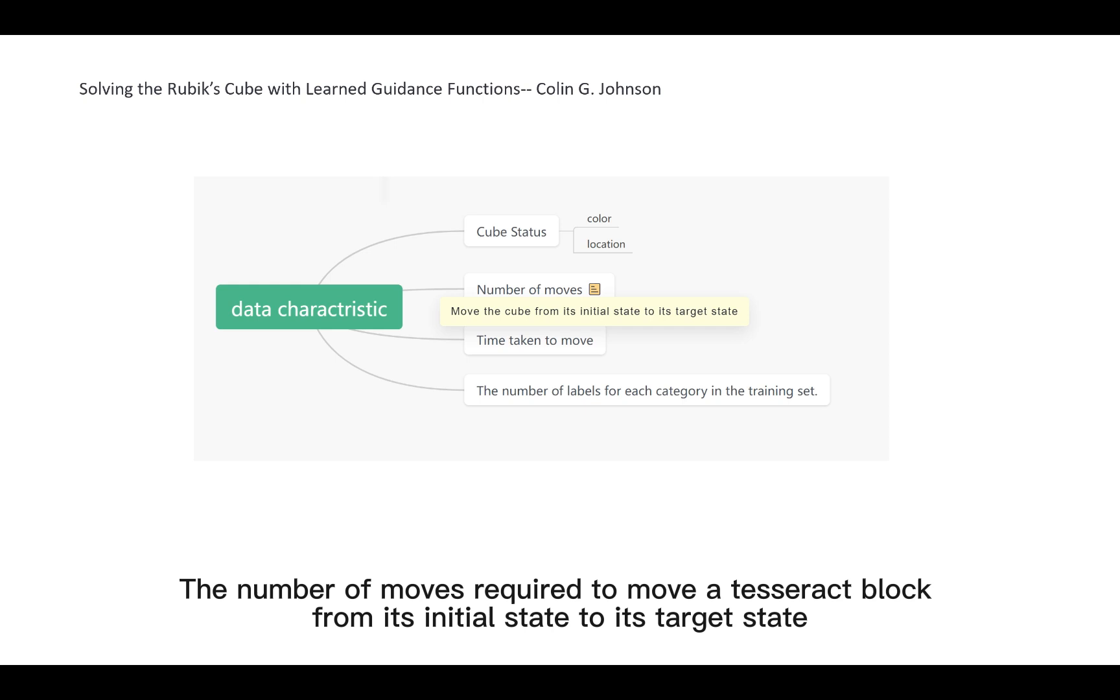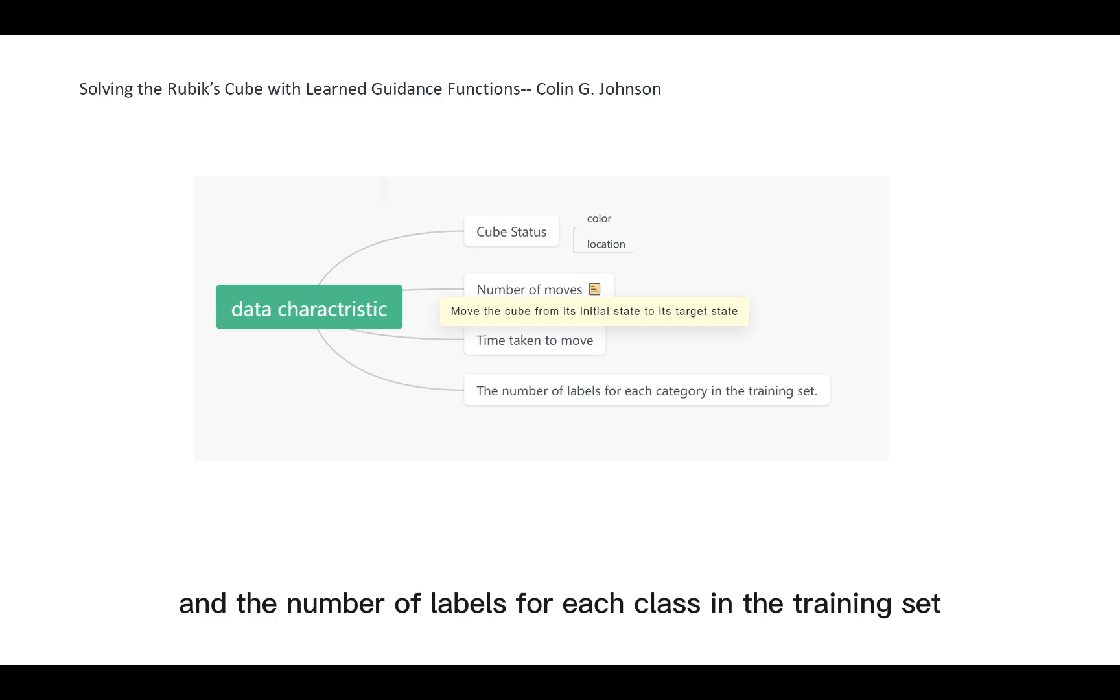The number of moves required to move a tesseract block from its initial state to its target state, the time taken to move, and the number of labels for each class in the training set.